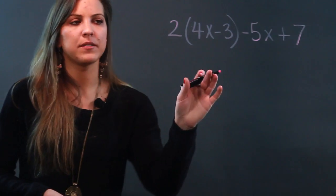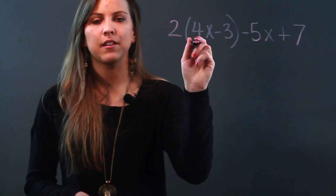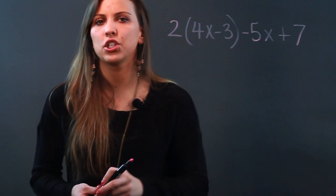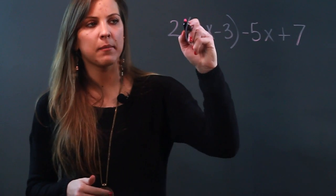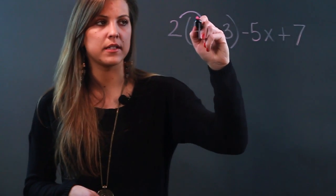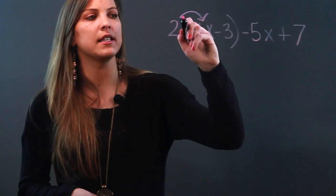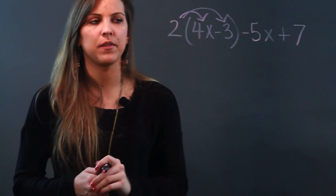To remove the parentheses, recognize that there's a number outside of the parentheses, which means I'm using the distributive property. I'm going to multiply the term outside of the parentheses by each term inside of the parentheses.